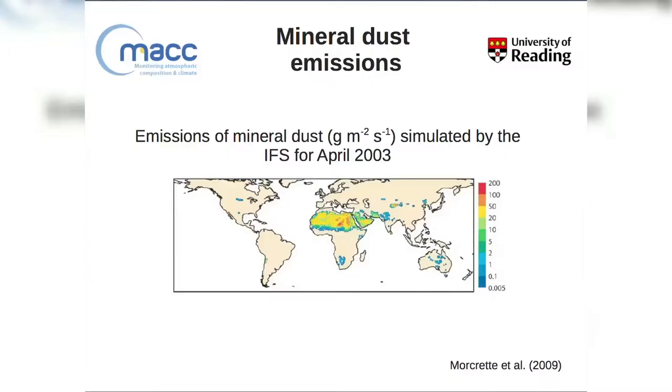For April 2003, the dust emission field shows the expected distribution: the Sahara is the dominant source of mineral dust. There are also strong local sources such as the Gobi Desert in northwestern China, and sources in South America, South Africa, and Australia.